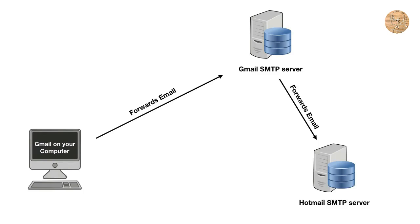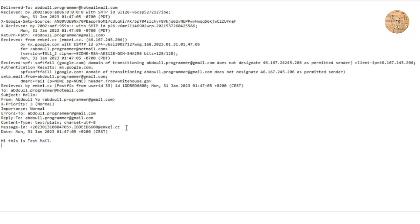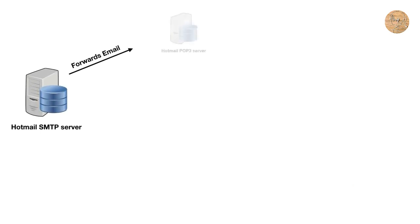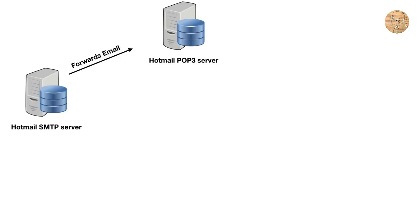The email is converted into a header, which looks something like this. Once the SMTP server receives the email header, it forwards it to the SMTP server of the receiver. For example, if the receiver's email ID is a Hotmail ID, then the SMTP server of Gmail will forward this email header to the SMTP server of Hotmail. Once received, it is again forwarded to the POP3 server of the receiver. POP3 stands for Post Office Protocol, and 3 is the version number. POP3 servers receive emails from SMTP servers and store them until needed.